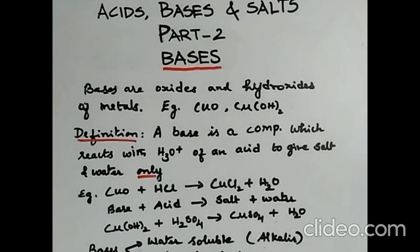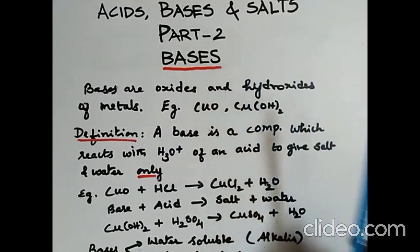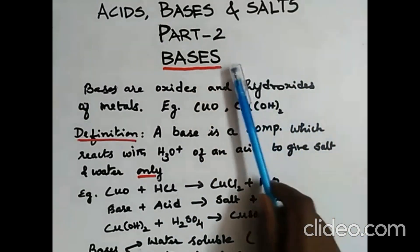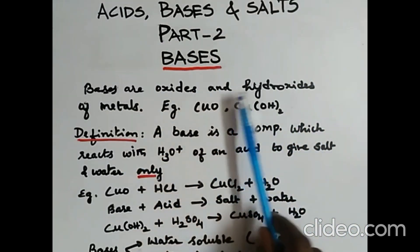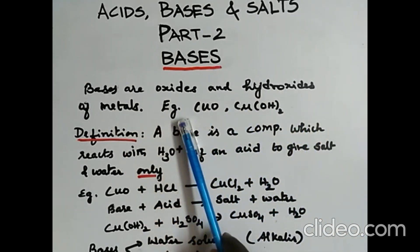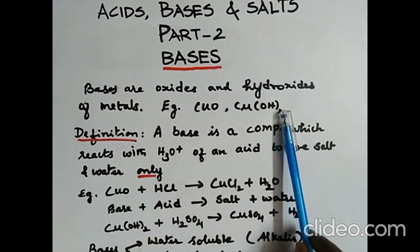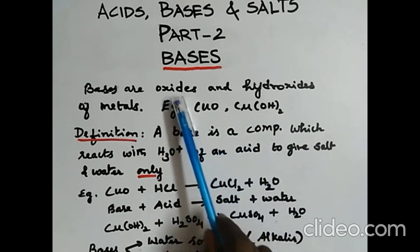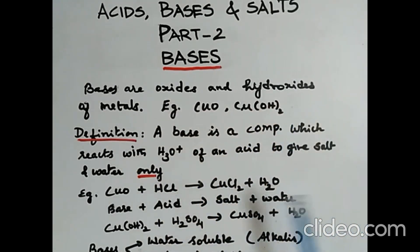Hello students, we are going to study the second part of acid bases in salt, that is bases. So first of all, what are bases? Bases are oxides and hydroxides of metal. Example: copper 2 oxide, copper 2 hydroxide — one example for an oxide, the other for a hydroxide.